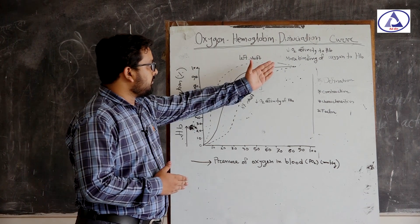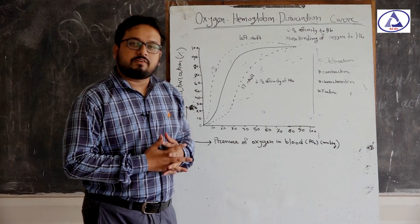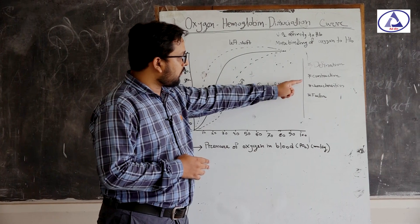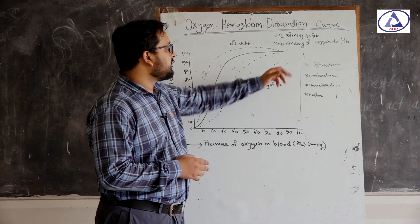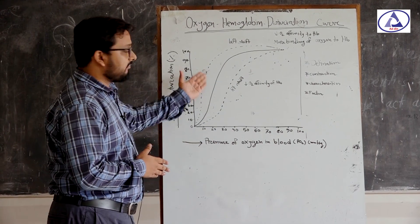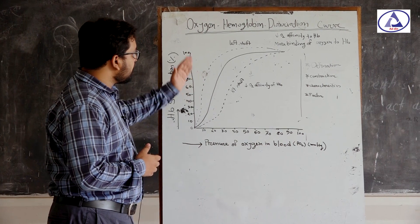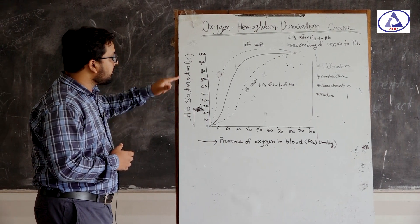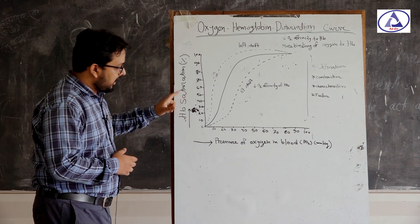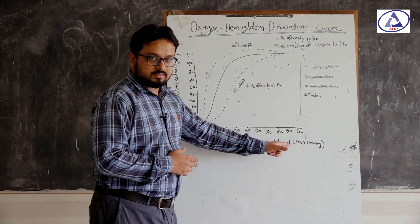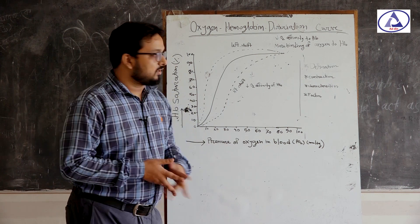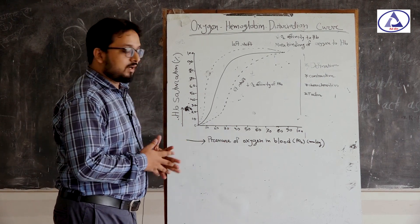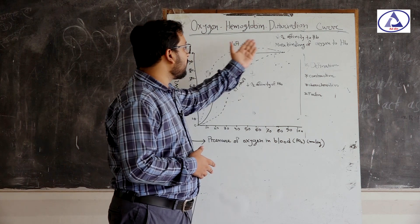Oxygen Hemoglobin Dissociation Curve. What may be the definition? We have to discuss first: definition, construction, characteristics, and factors. It is a graphical representation showing the relation of hemoglobin saturation of oxygen and the pressure of oxygen in blood. The graphical representation of hemoglobin saturation and pressure of oxygen in blood is called the Oxygen Hemoglobin Dissociation Curve.